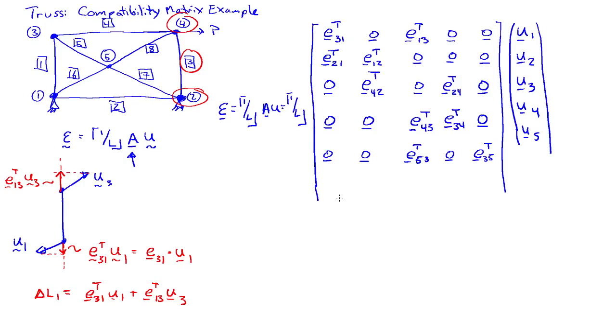Bar 6 connects nodes 1 and 5. So that'll be E51, the vector that goes from node 5 to 1. And 0, 0, 0, E15 transpose. So that's the vector that goes from 1 to 5.